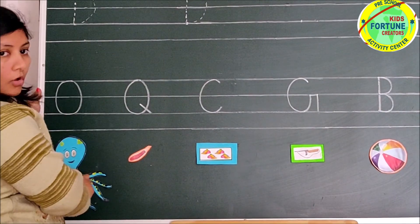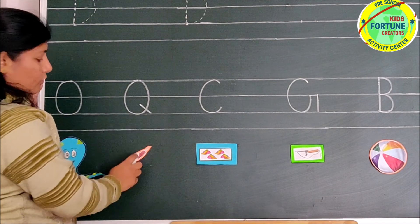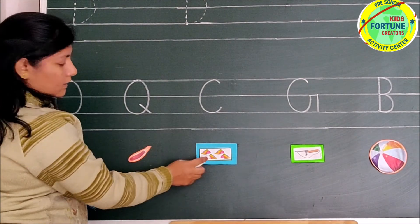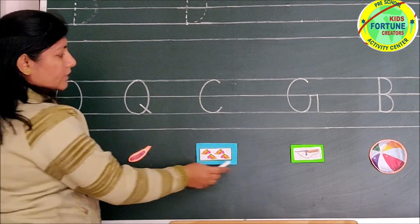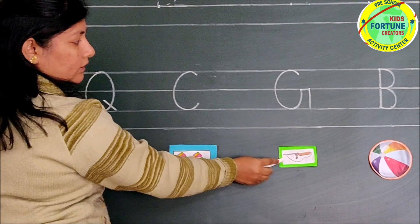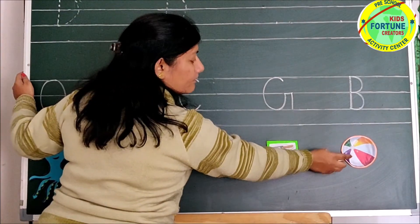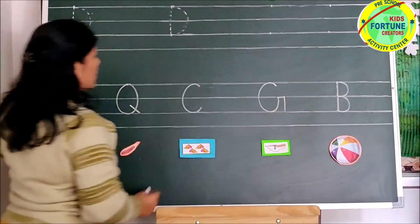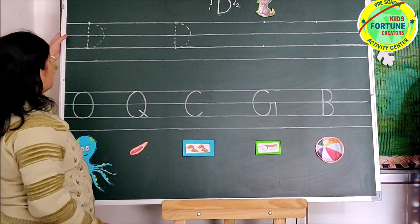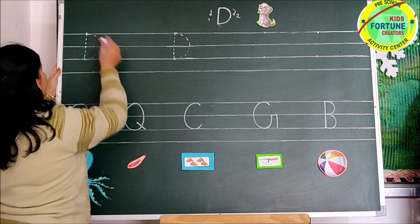O, O — Octopus. Q, Qu — Quill. C, K — Cap. G, G — Gun. And B, B — Ball. Now we will write letter D.